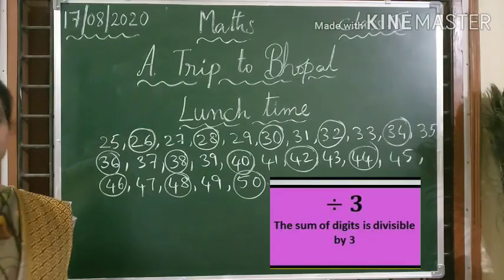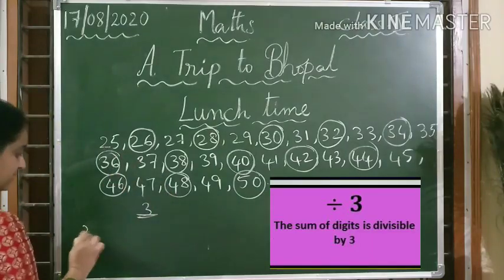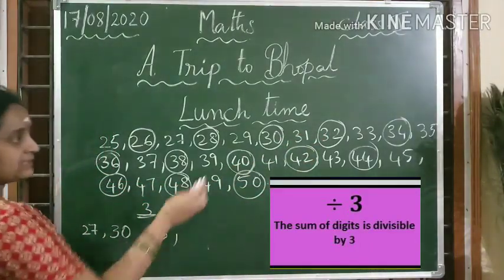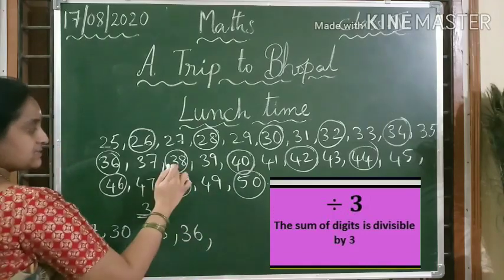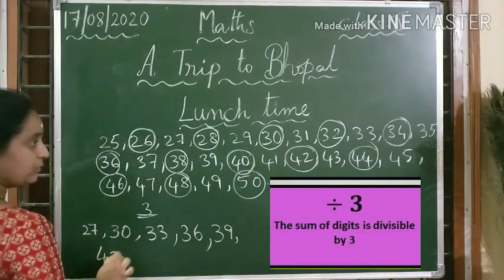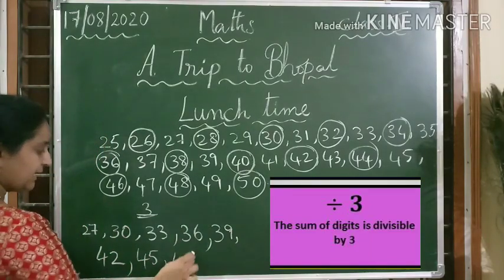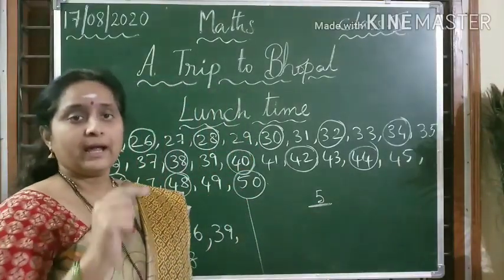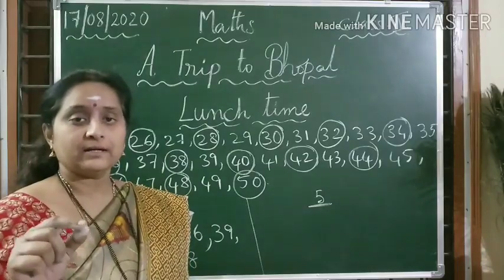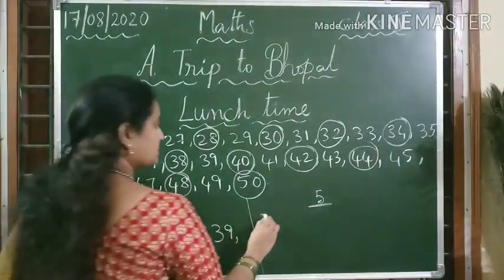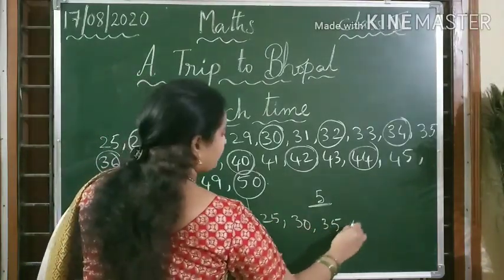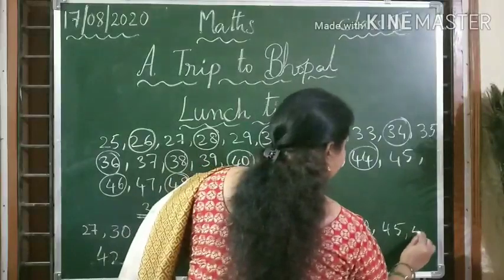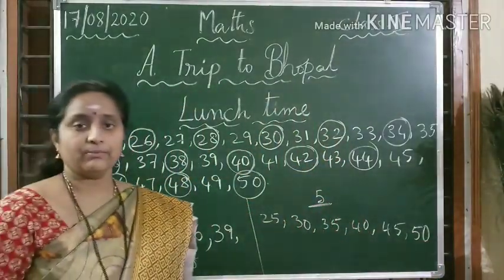Now let us see which numbers are divisible by 3: 27, 30, 33, 36, 39, 42, 45, 48. Now for divisibility by 5 — any number ending with 0 or 5 is exactly divisible by 5. So 25, 30, 35, 40, 45, 50 are divisible by 5.